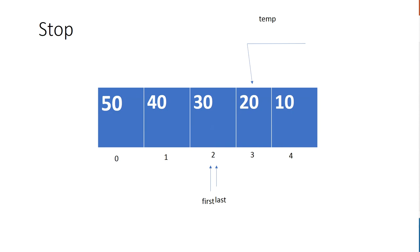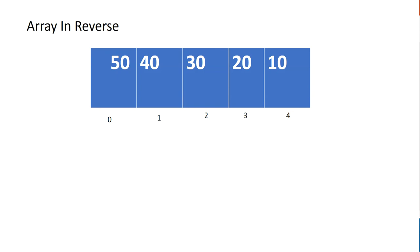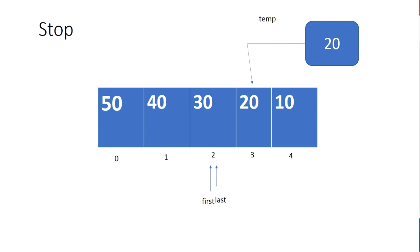The point where the pointers meet each other is when we stop. In C++, the condition is: we never want to reach the point where 'first' and 'last' meet, because if we do there's no sense in swapping — everything has been swapped. So we say: while 'first' is less than 'last' in terms of indexes, we swap; otherwise we break out of the loop. This gives us the reversed array: 50, 40, 30, 20, 10.